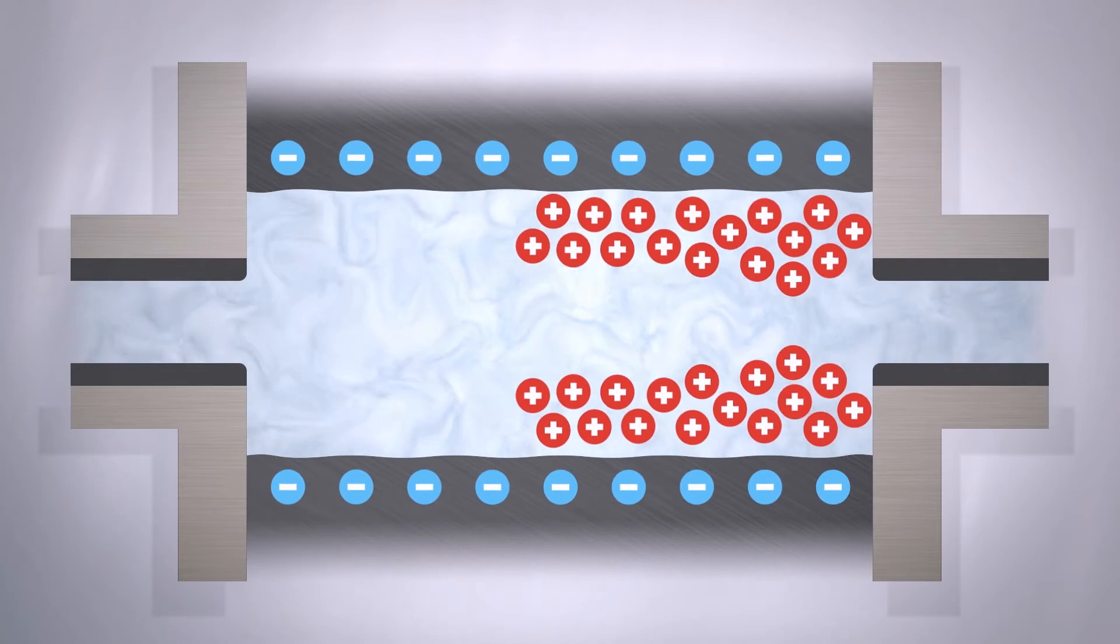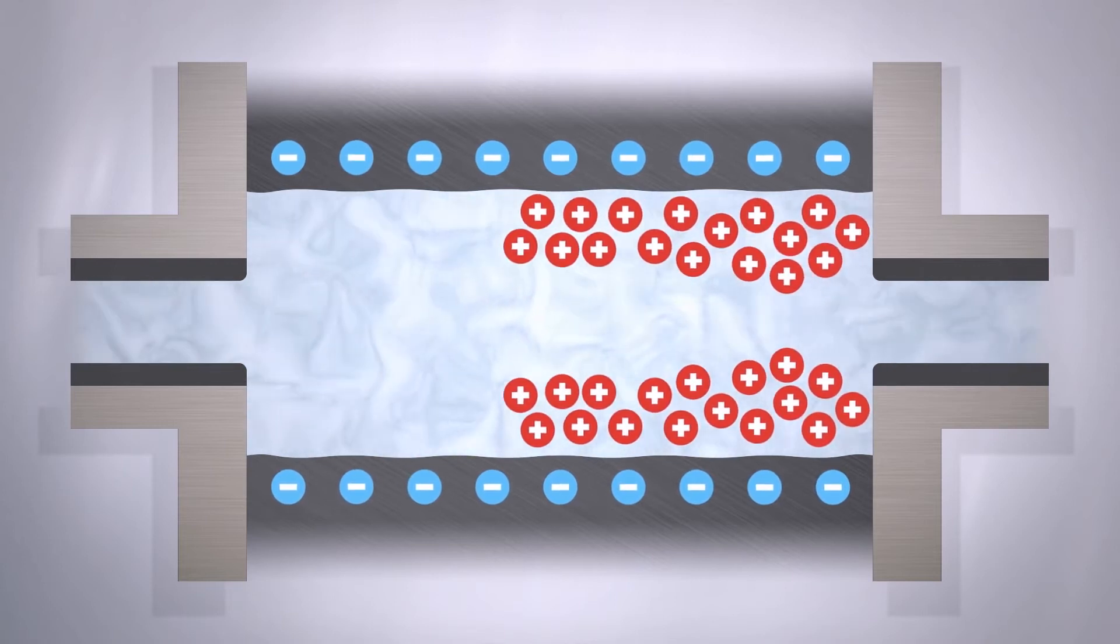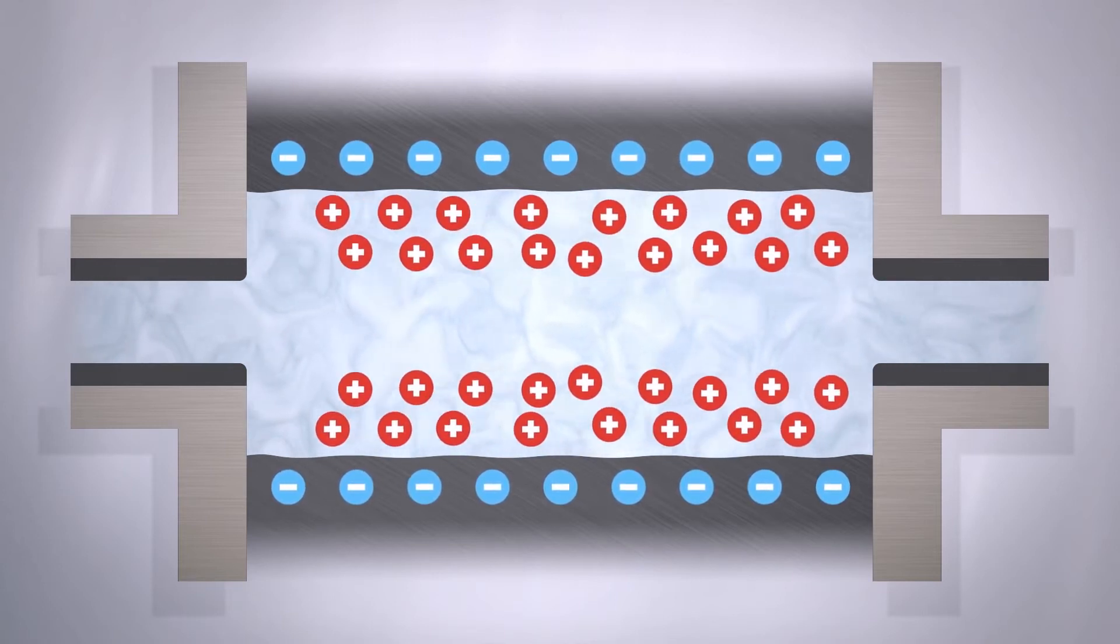Electrodes placed at both ends of the flow channel measure the streaming potential. With the applied pressure and the measured streaming potential, the zeta potential is then calculated.